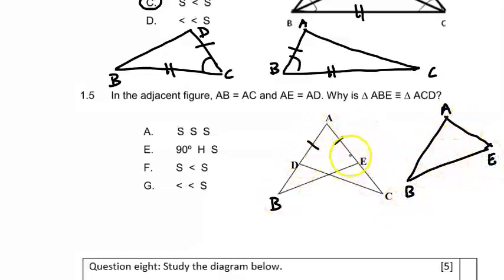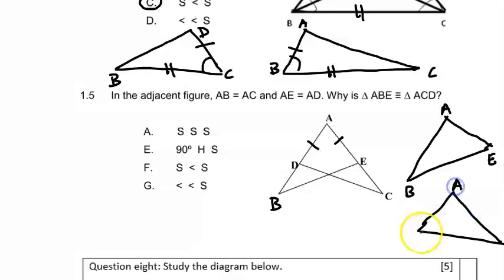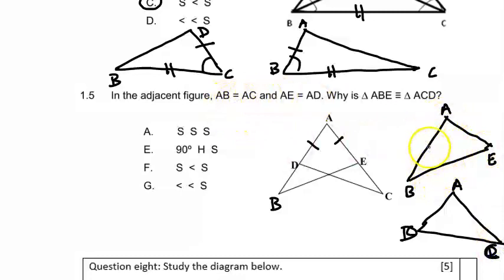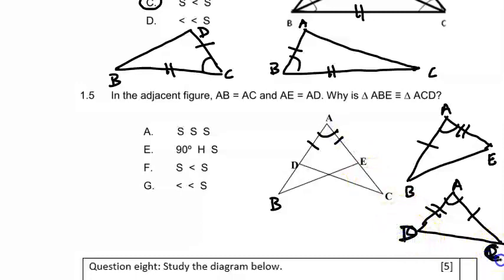And let's draw triangle ACD, which would look something like this with points A, C and D. We are told that AB is equal to AC, and AE is equal to AD. We also have a common angle which is angle A. So we have two sides identical and an included angle.